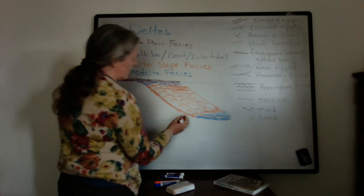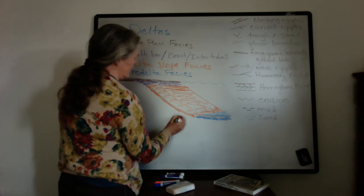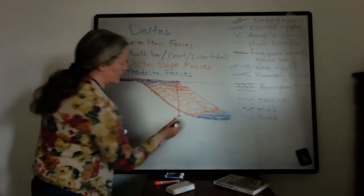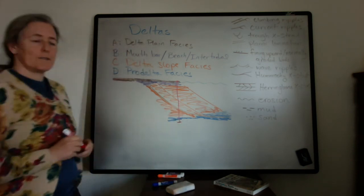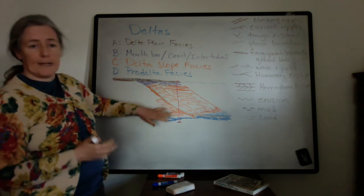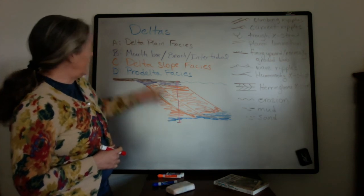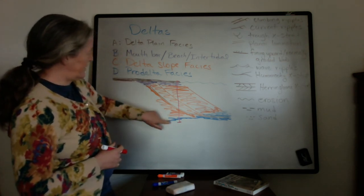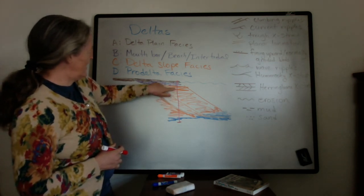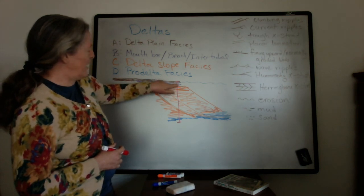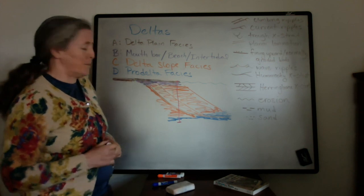If we look at any one spot in time, in place, this is what we would see in a stratigraphic column. So what we would see through time at any given location, for example, if we're measuring a stratigraphic column, would be the pro-delta facies, overlaid by the delta slope facies, overlaid by the shoreline mouth bar facies, and then at the top, the delta plane facies.